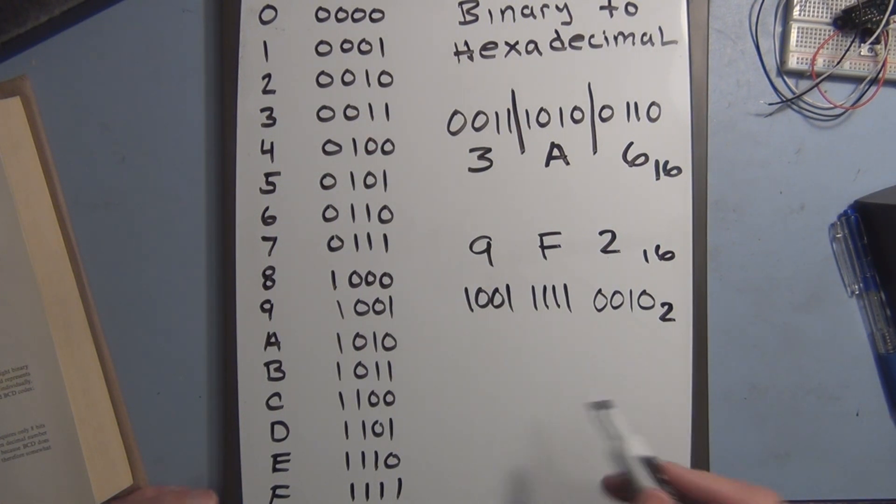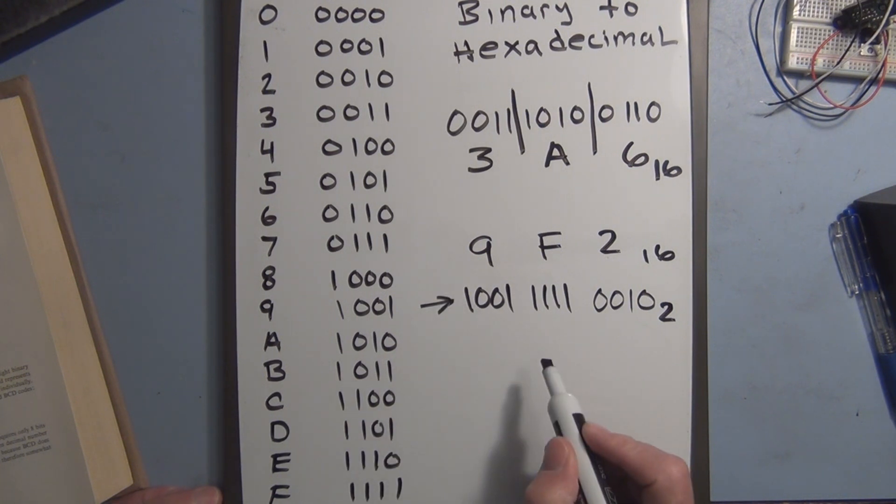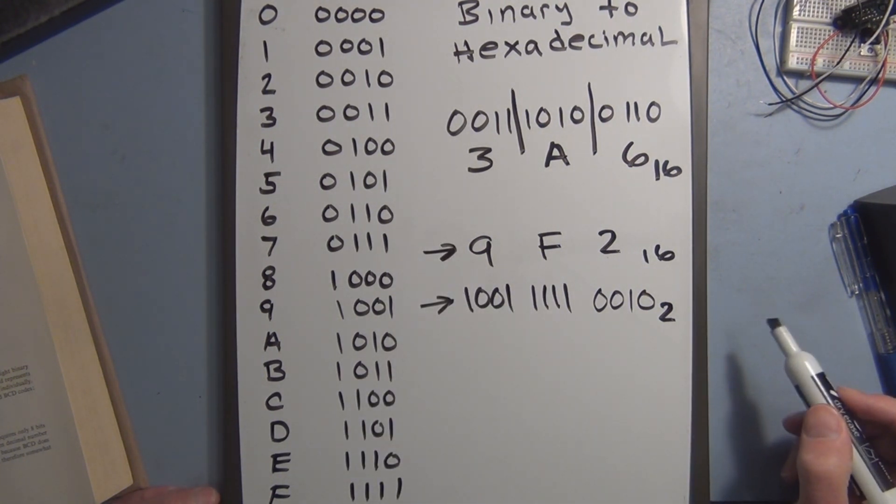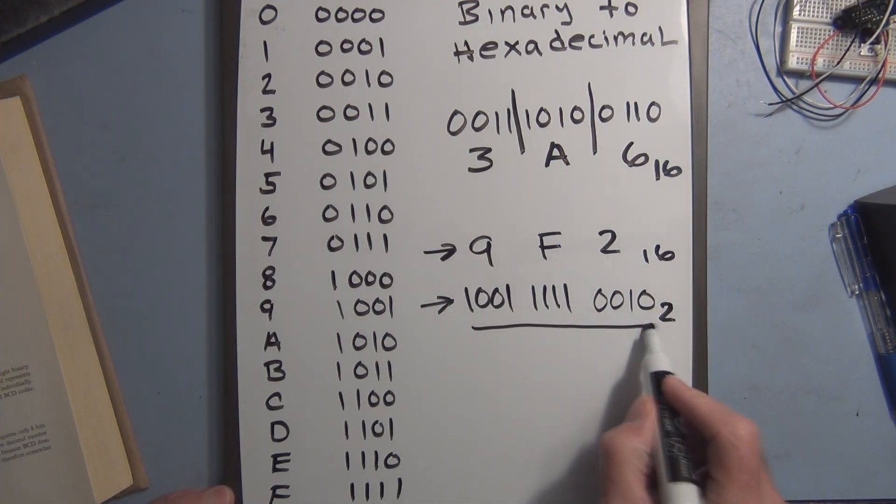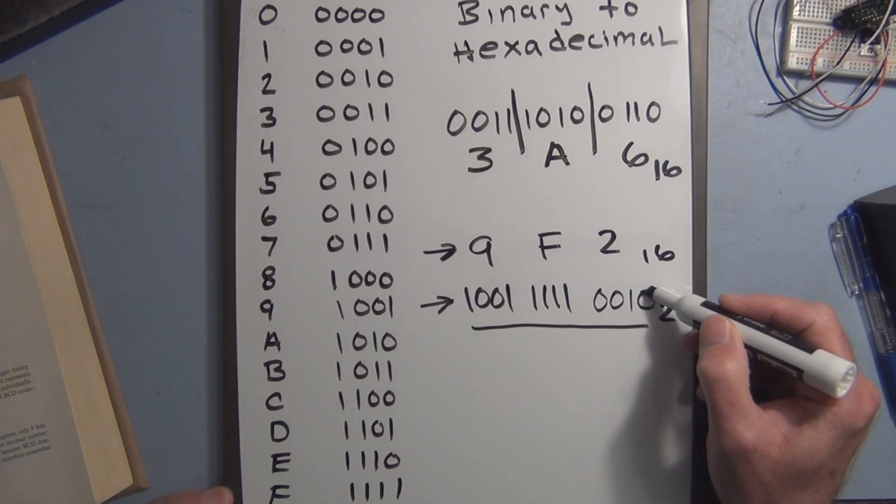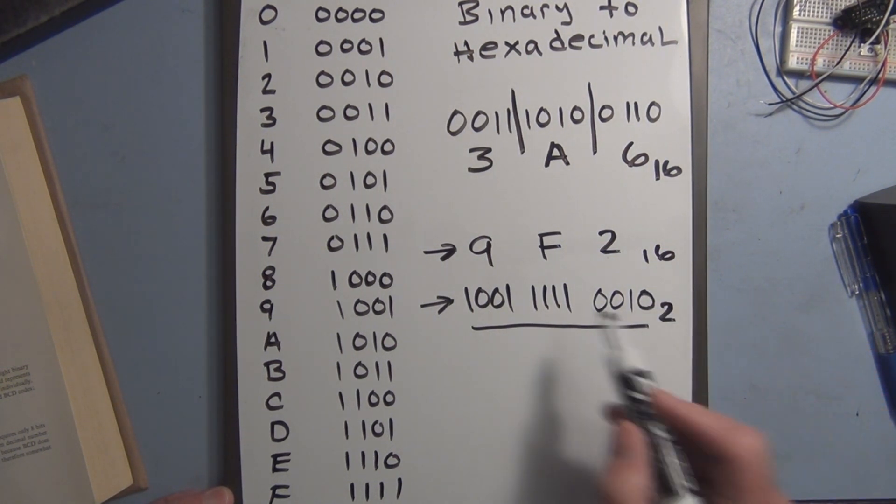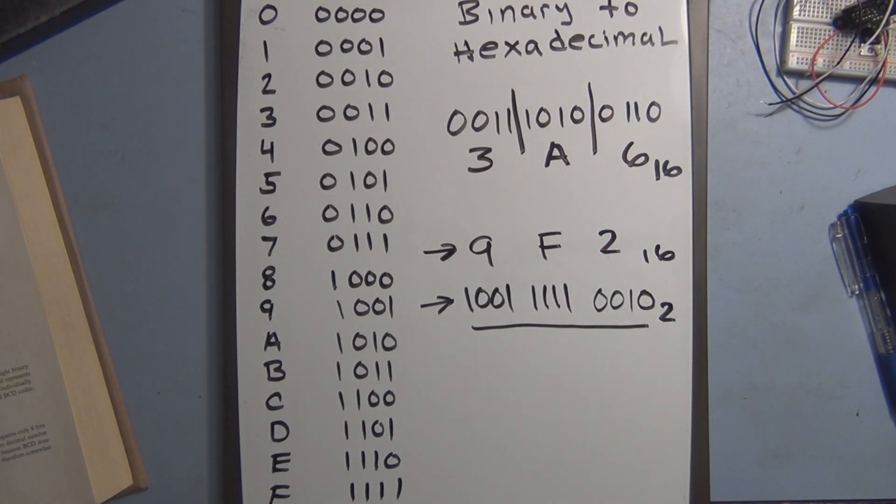So what would you rather deal with? This binary number or this hexadecimal number? I think you're more prone to errors, having to keep track of a number like this, having to enter in ones and zeros, as opposed to entering in this hexadecimal equivalent.